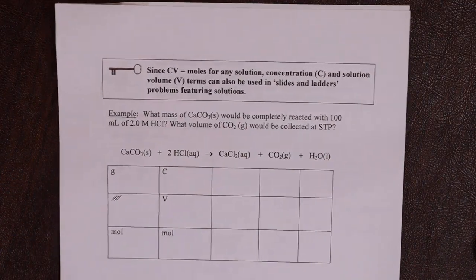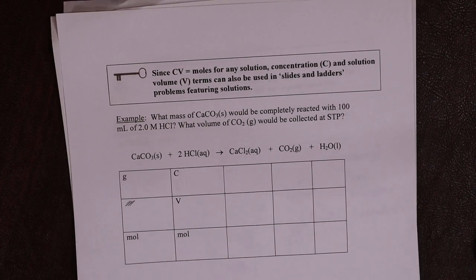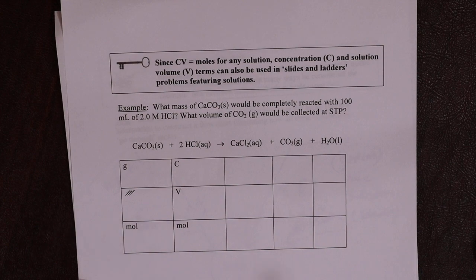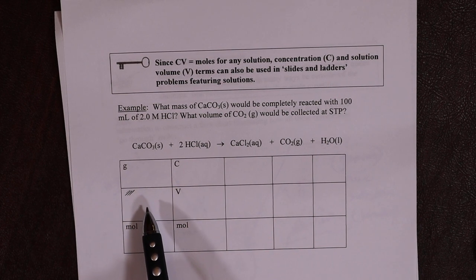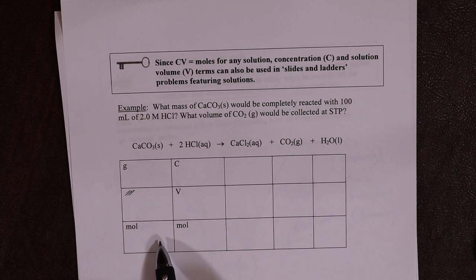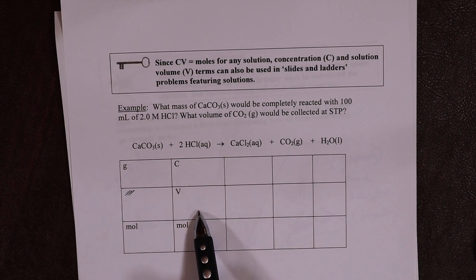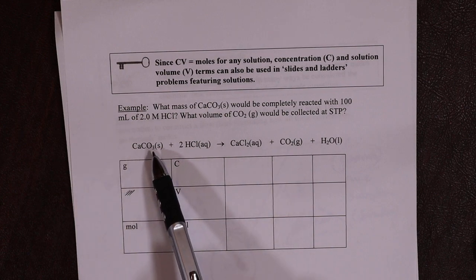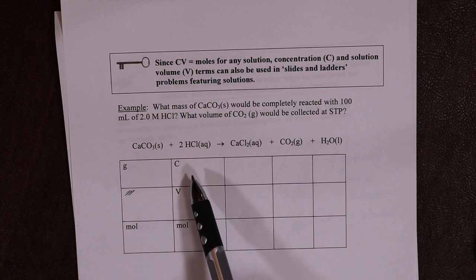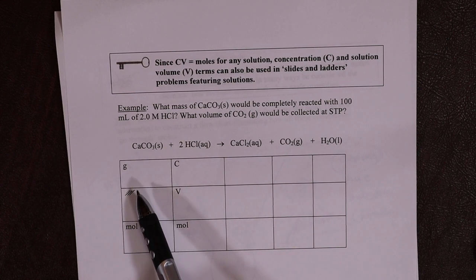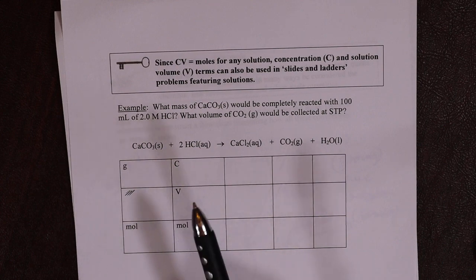Now, last thing. Last packet question. Sometimes you can mix and match the solid triangle, so we do grams, molecular weight, and moles for a solid, with the aqueous triangle, concentration, volume, and moles, right? Okay, so if you get a mixture of reagents, solid and aqueous, you can use CV moles triangle for aqueous, grams, molecular weight, moles for a solid.